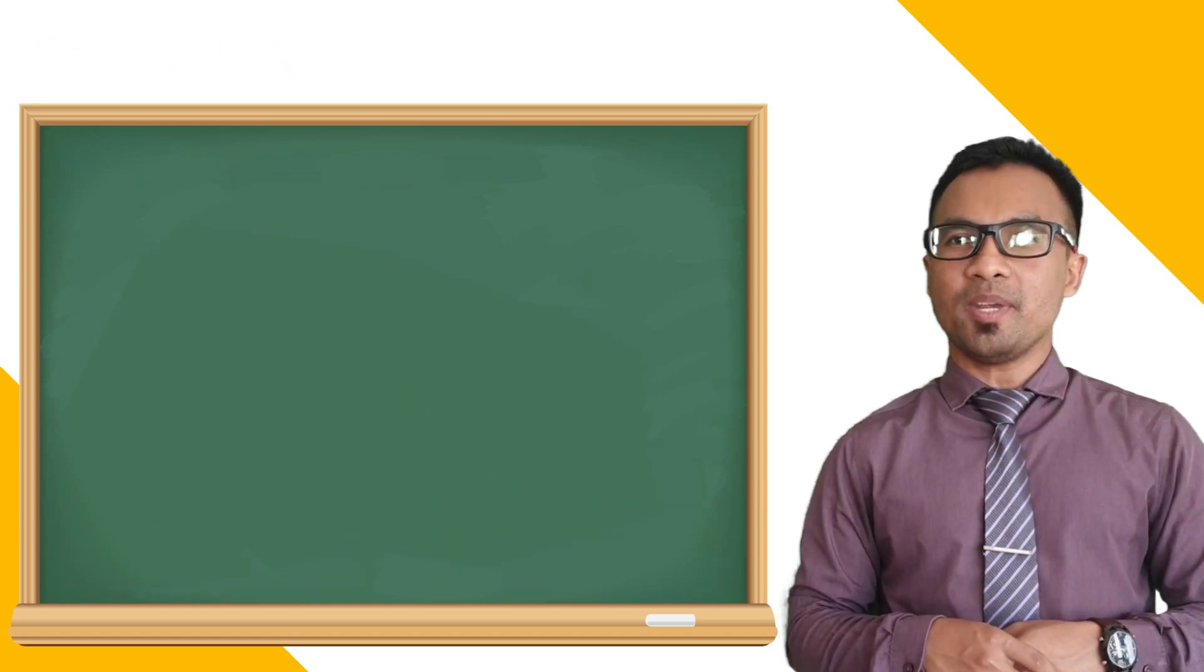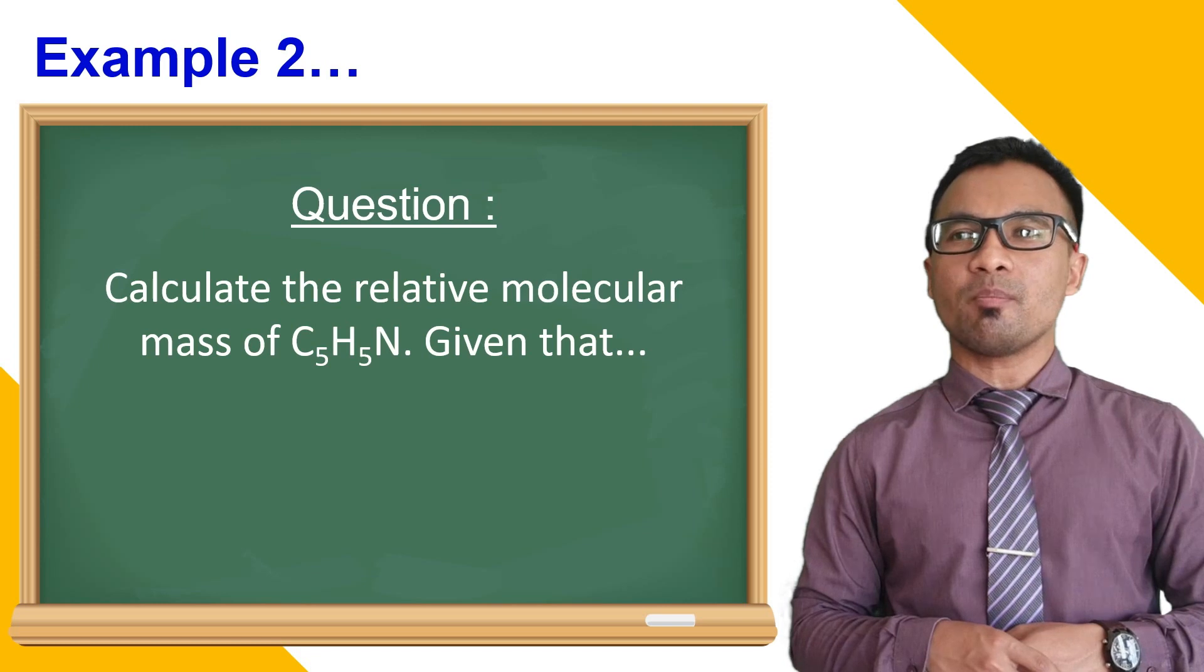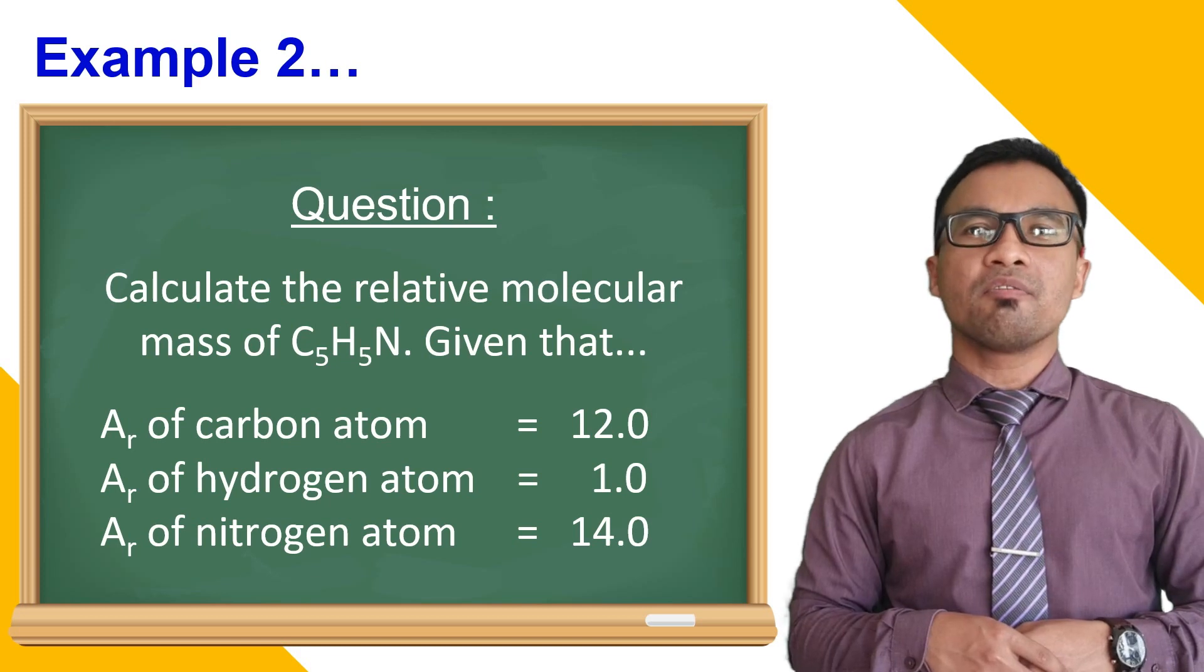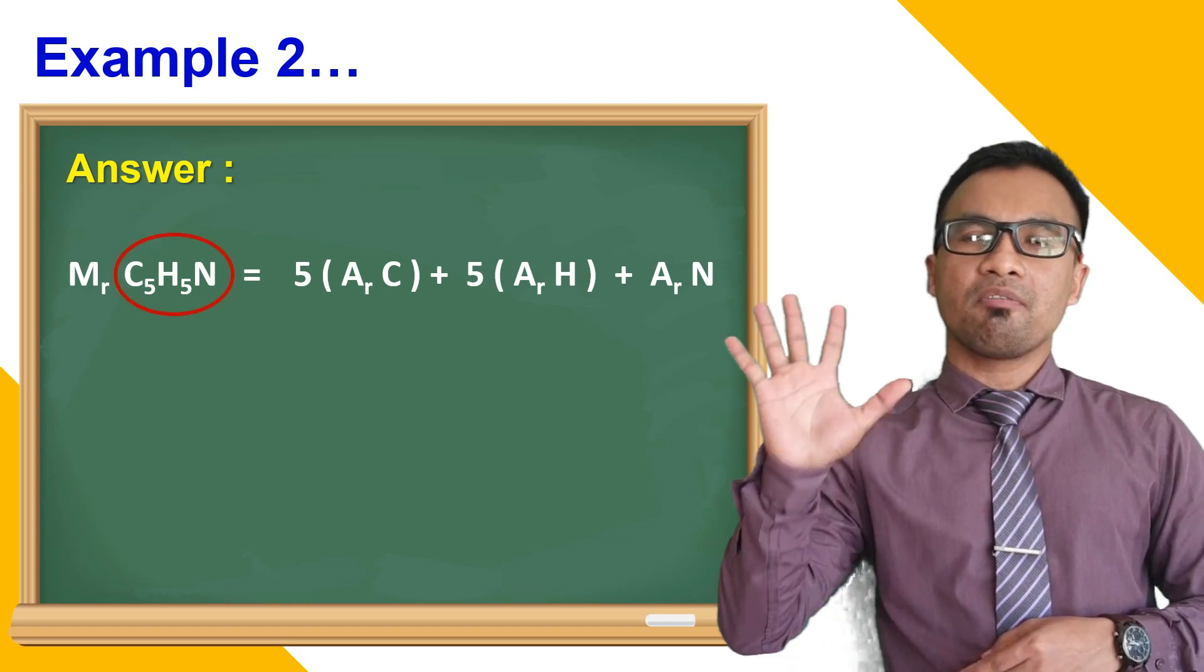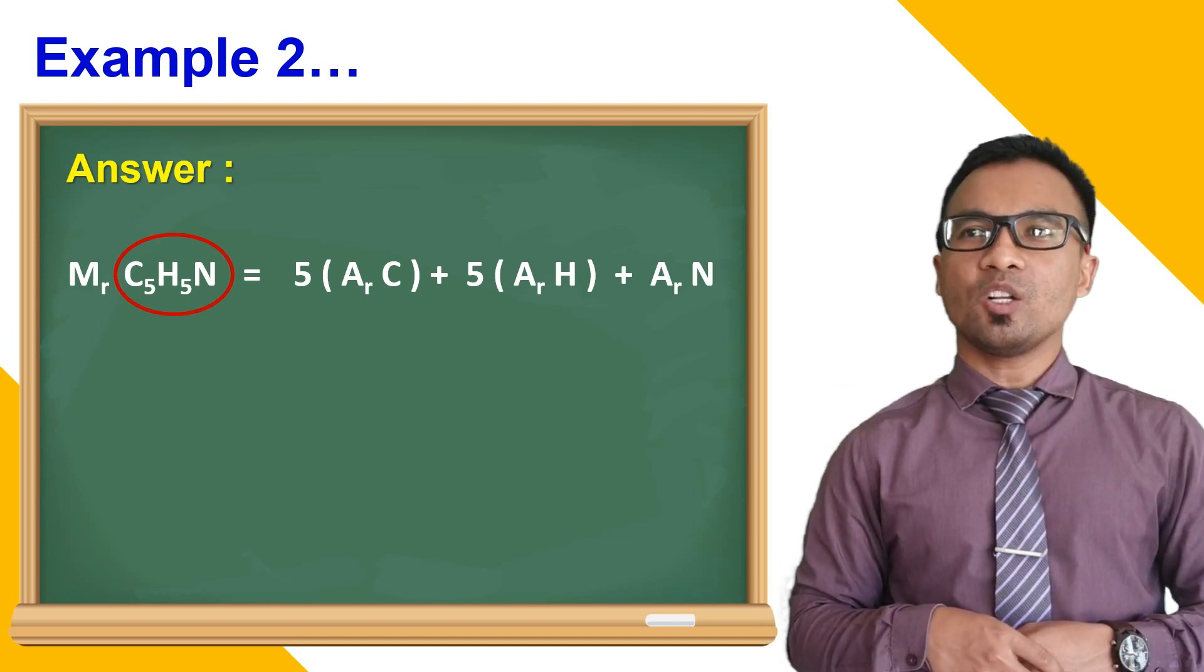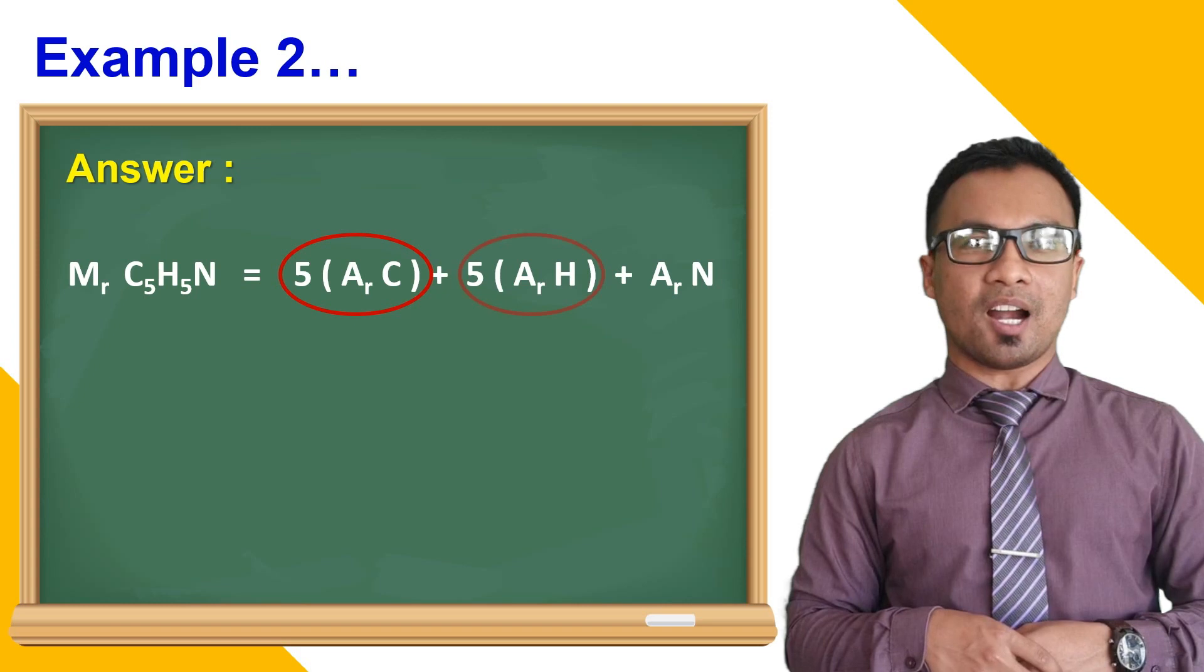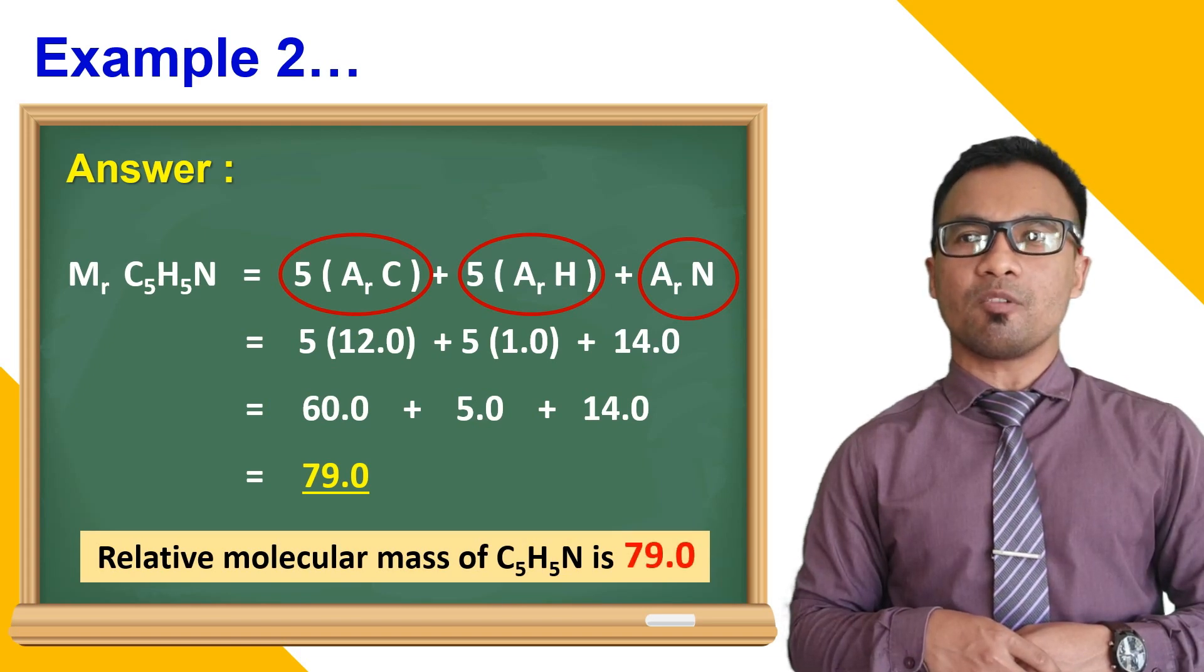Let's look at how we can determine the relative molecular mass for molecules. In this example, we are going to determine the relative molecular mass of pyridine, C5H5N, given the relative atomic mass for carbon, hydrogen, and nitrogen. First, look at the molecular formula of pyridine. The compound contains 5 carbon, 5 hydrogen, and 1 nitrogen. So, when calculating the molecular mass, we need to consider the number of each atom in the molecule. Therefore, adding up 5 atoms of carbon, 5 atoms of hydrogen, and nitrogen will give us the relative molecular mass of pyridine.